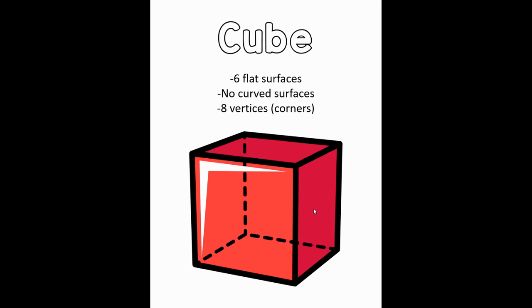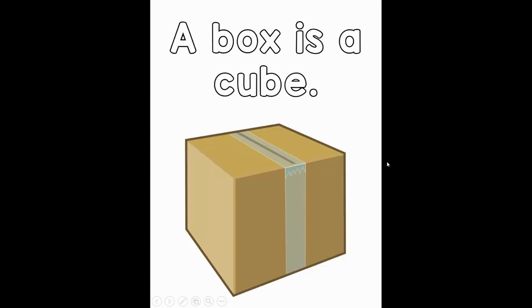This shape has no curved surfaces but it does have eight corners or eight vertices. Remember that the vertex, or the vertices, are where the edges of the shape come to a point and they meet — eight corners or eight vertices on this shape. And we could say that a box is a cube. It's got eight vertices, six surfaces, and many edges as well, but it has no curved surfaces.